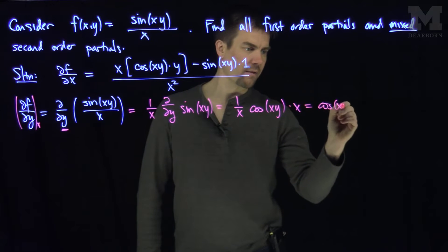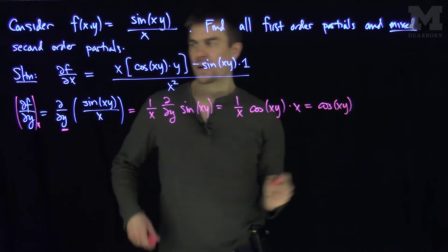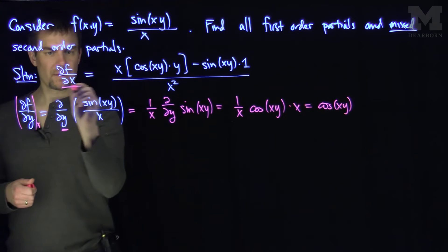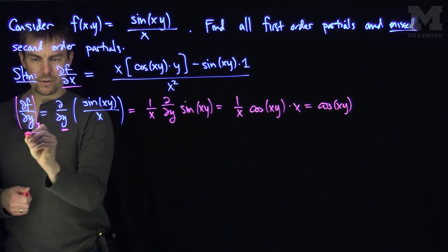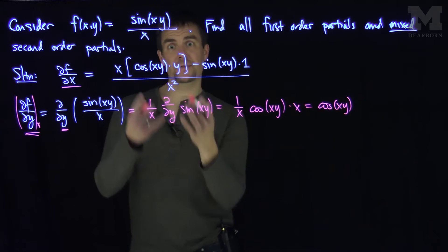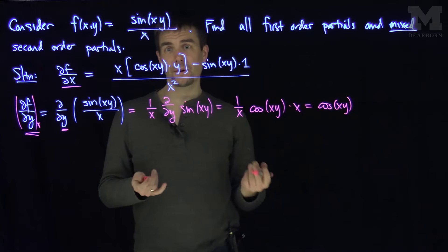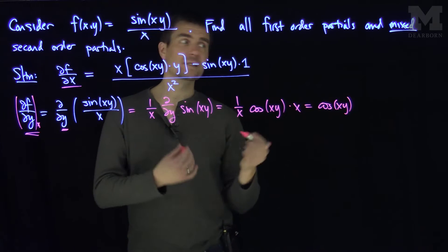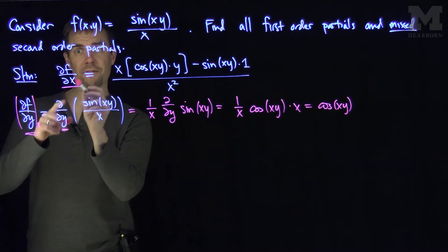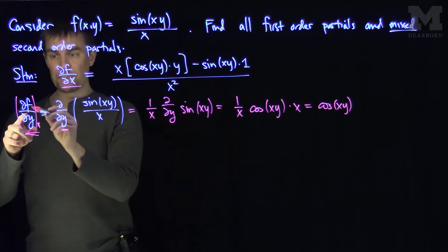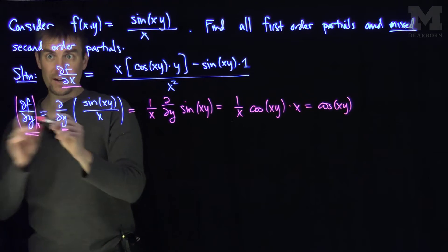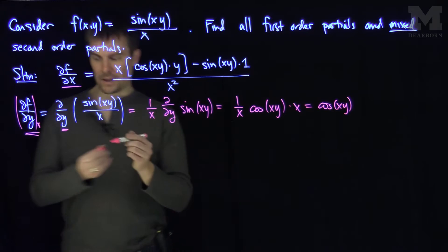So I just get cosine(xy). Notice that the x derivative and the y derivative are very different functions. The x derivative is fairly complex, and the y derivative is fairly simple. Let's compute the mixed partial derivatives, which is ∂²f/∂x∂y and ∂²f/∂y∂x, and see how they relate.